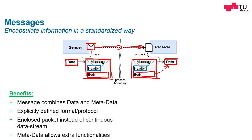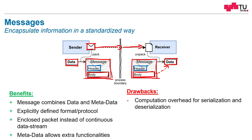The metadata in the header also allows for extra functionality — for example, prioritization or a version switch. What are the drawbacks? The serialization and deserialization of messages involves some computation overhead.